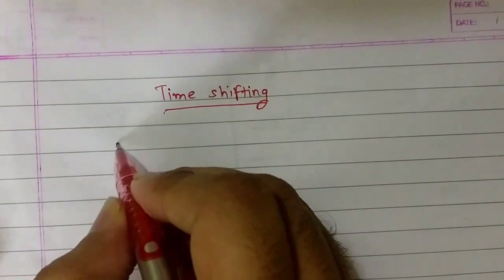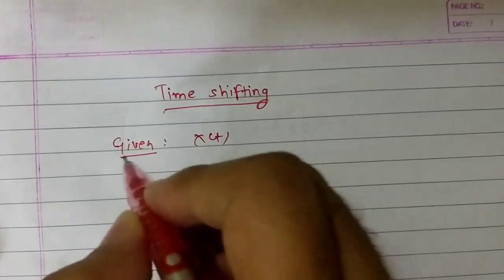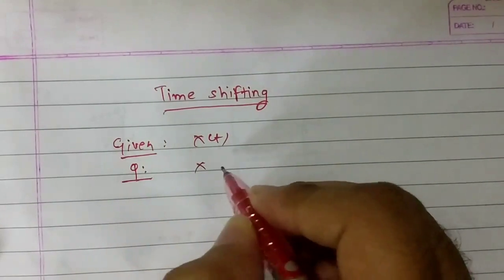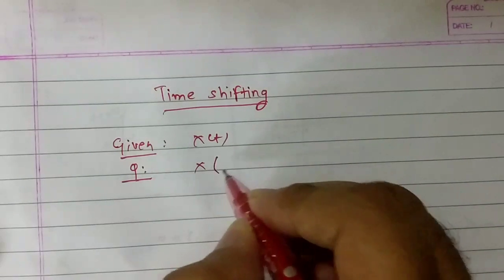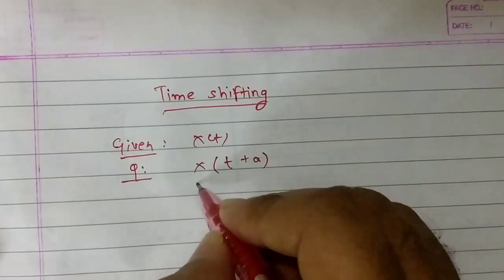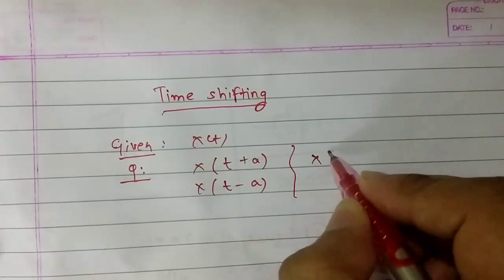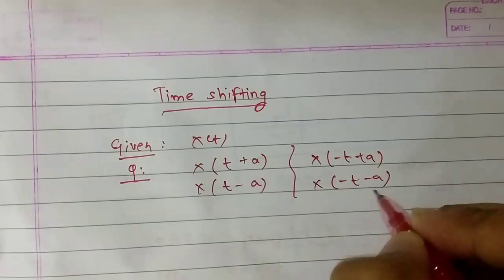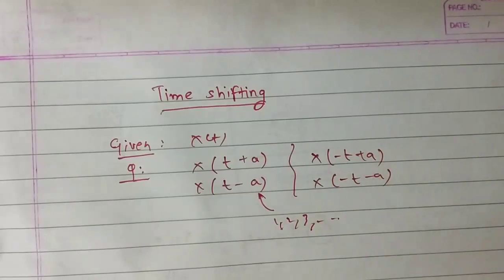First, you have to understand what is given in the question — X is given. The question can be in general form: X(t+a), X(t-a), X(-t+a), or X(-t-a), where 'a' represents any value: 1, 2, 3, or any value.